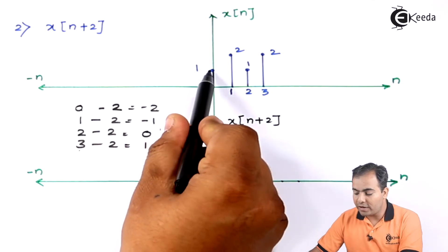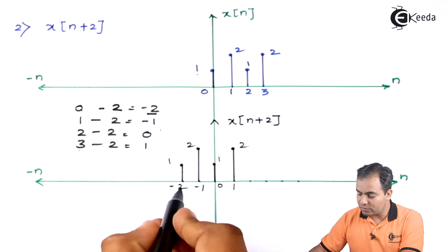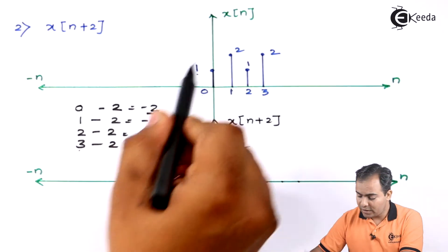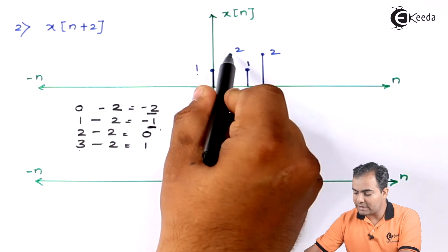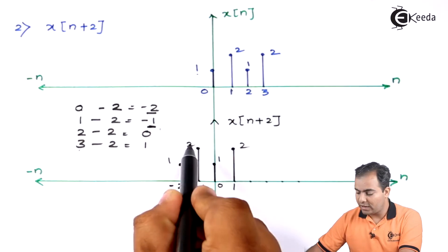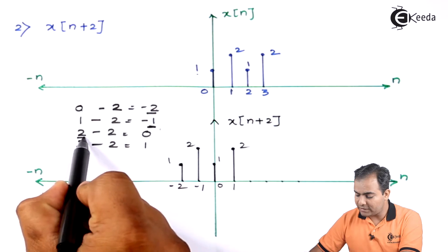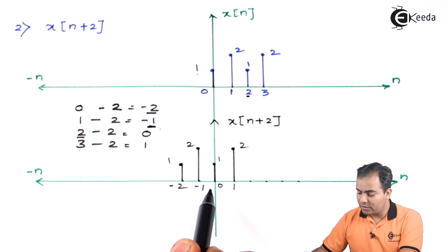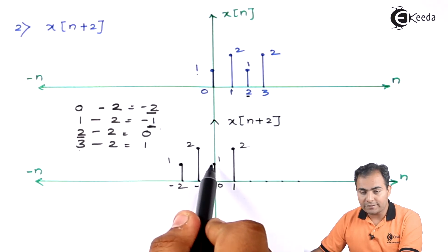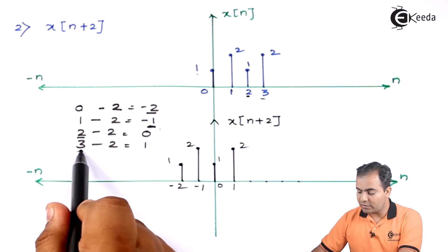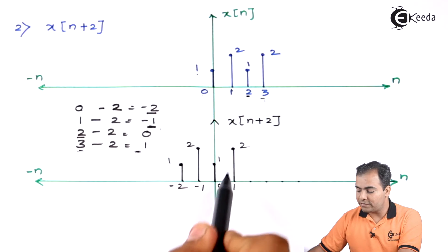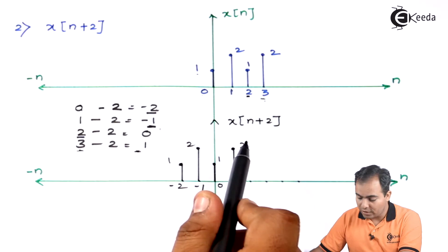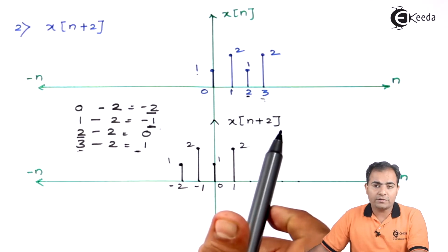At n=0 we have amplitude 1, and its new location is minus 2, so at minus 2 we plot amplitude 1. At n=1 we have amplitude 2, and the new location is minus 1, so amplitude 2 is now at minus 1. At n=2 amplitude is 1, new location is 0, so at 0 we have amplitude 1. At n=3 amplitude is 2, new location is 1, so at 1 we have amplitude 2. This is the time-shifted result.